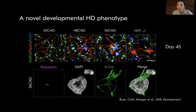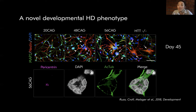These HD phenotypes prompted us to further investigate the role of Huntingtin in early embryogenesis. Indeed, Huntingtin is widely expressed from the fertilized egg onwards, and probably the most compelling proof of its function in early development is that its knockout is embryonic lethal at gastrulation stages in the mouse.